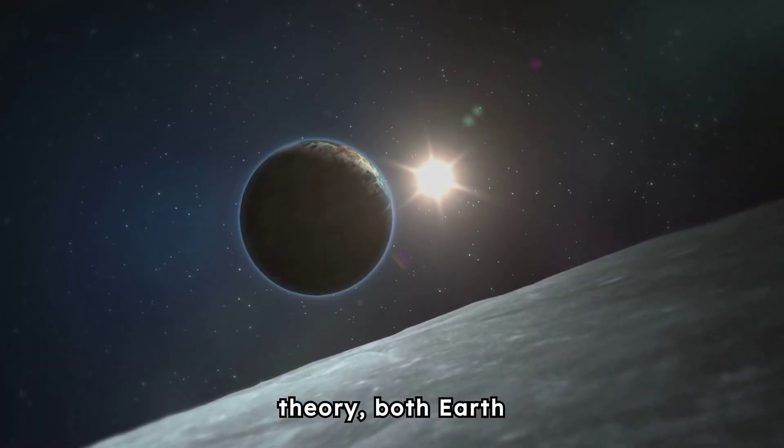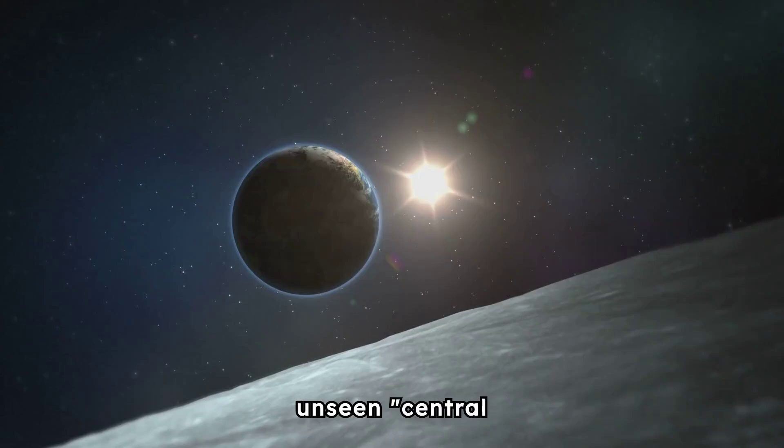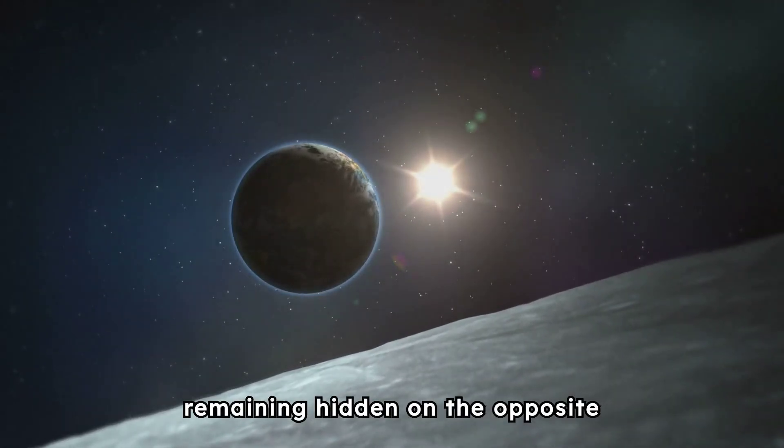According to the Counter-Earth Theory, both Earth and the Sun revolve around an unseen central fire, with Antikthon remaining hidden on the opposite side.